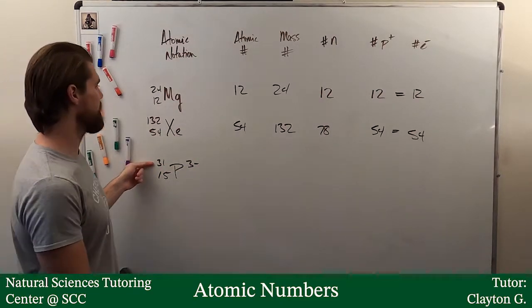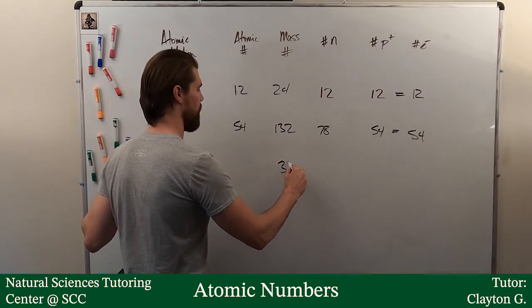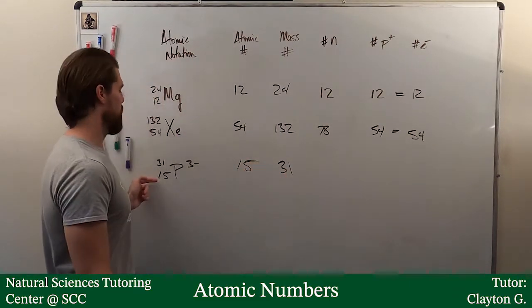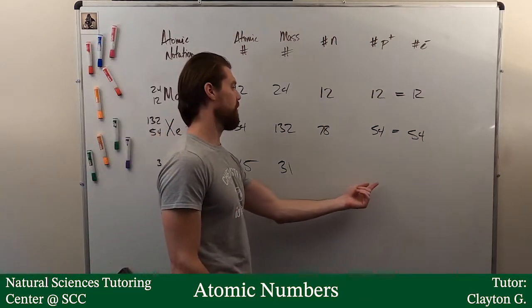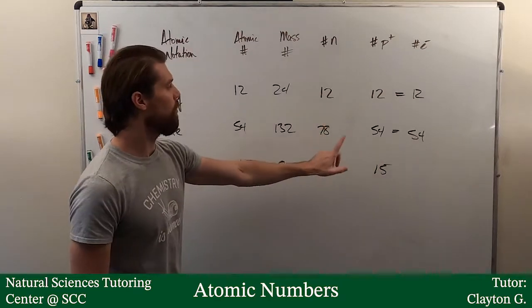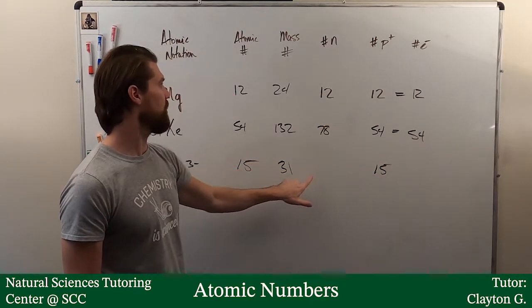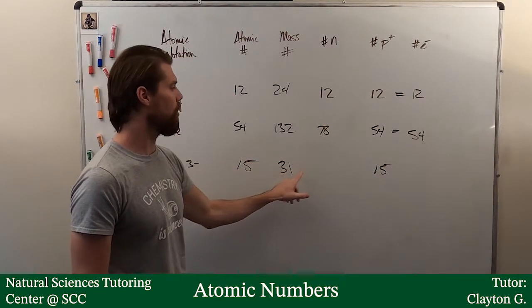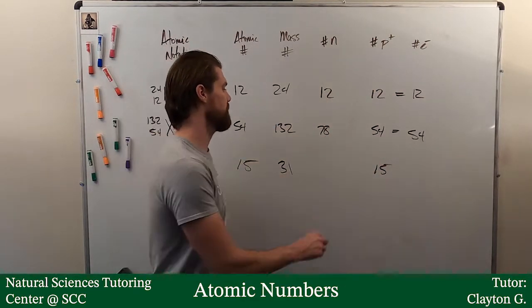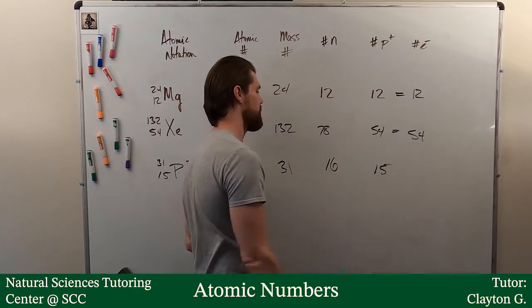First thing I want to do, let's throw our mass number down, 31, atomic number 15. Atomic number refers to the number of protons, so this must also be 15. I know protons plus neutrons equals mass number, so 31 minus 15 minus the number of protons will give me my neutrons. That's going to be 16.